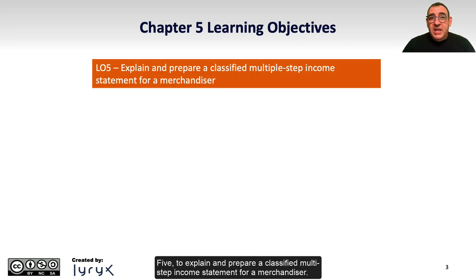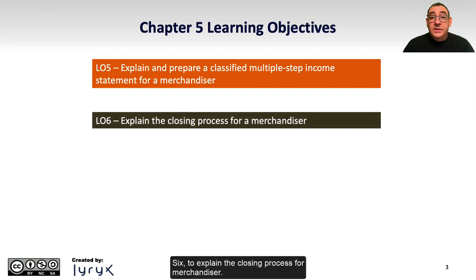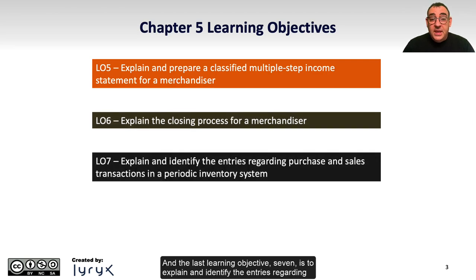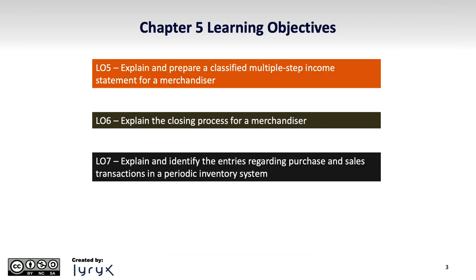Five, to explain and prepare a classified multi-step income statement for a merchandiser. Six, to explain the closing process for a merchandiser. And the last learning objective, seven, is to explain and identify the entries regarding purchase and sales transactions in a periodic inventory system.